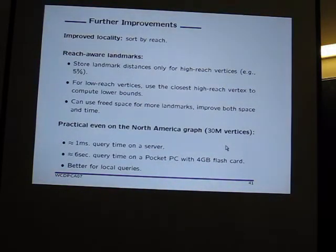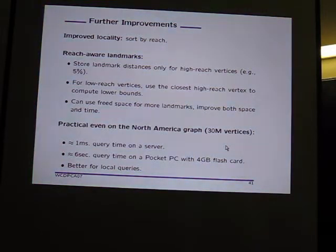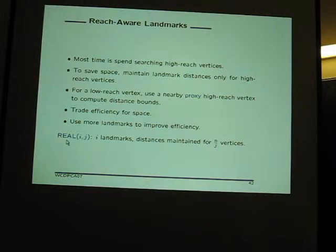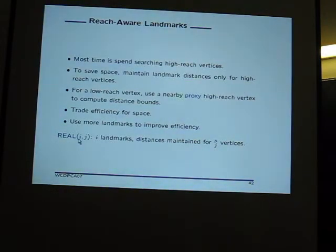These results are for random queries where points are expected to be far apart. For local queries — which are most queries, like going across one part of a city — it's about four times faster. The algorithm is called REAL, combining reach and landmarks. REAL(I,J) means I landmarks with distances stored to the top 1/J fraction of vertices.